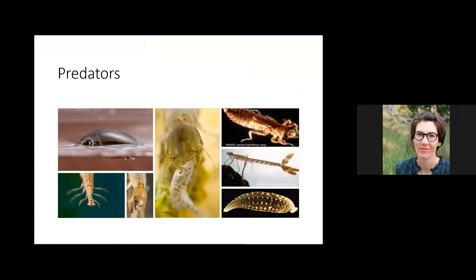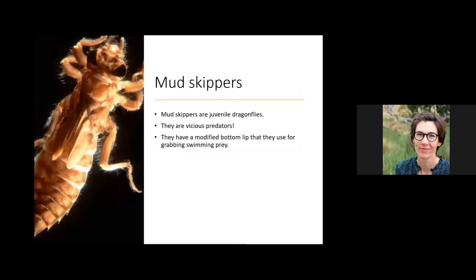Now for the predators — everybody loves the predators because they always look like alien creatures. One of my favorite animals in the whole wide world are the mudskippers — actually juvenile dragonflies. I love them because dragonflies are beautiful animals, and also because they're really vicious, aggressive predators with some amazing superpowers.